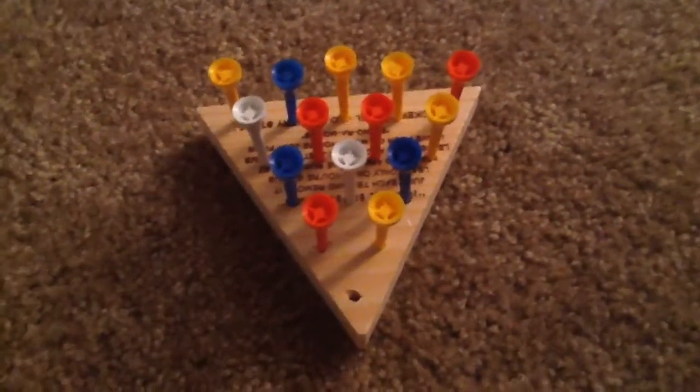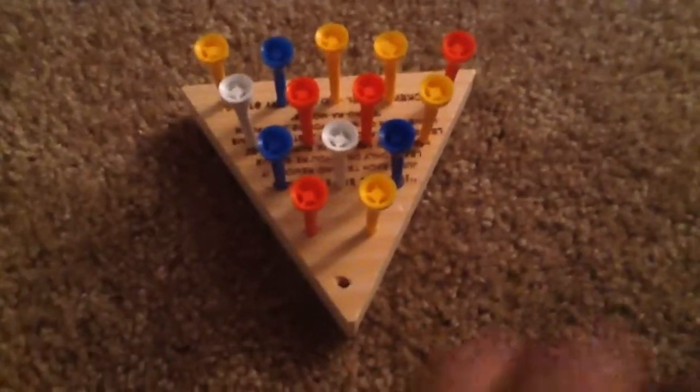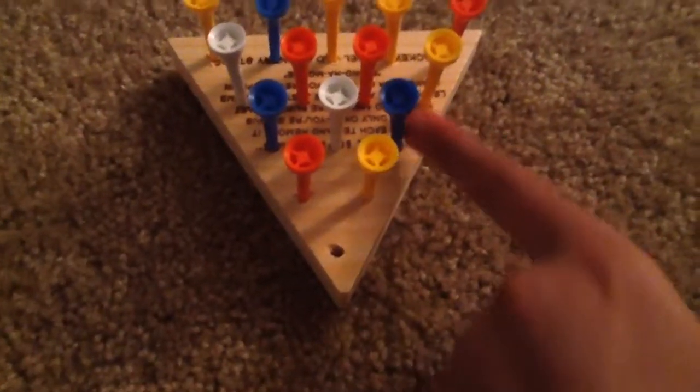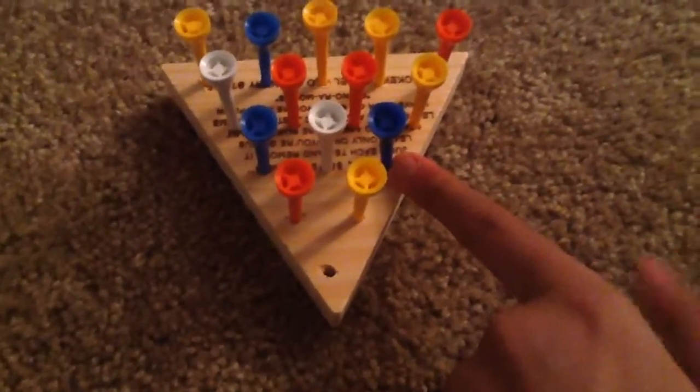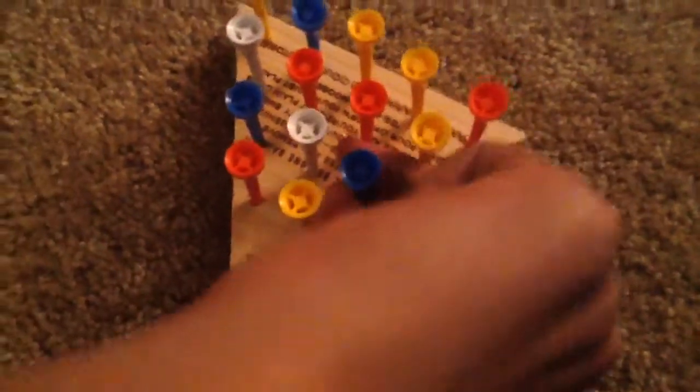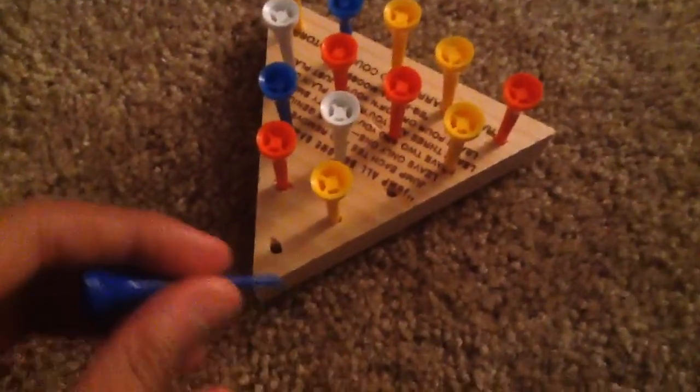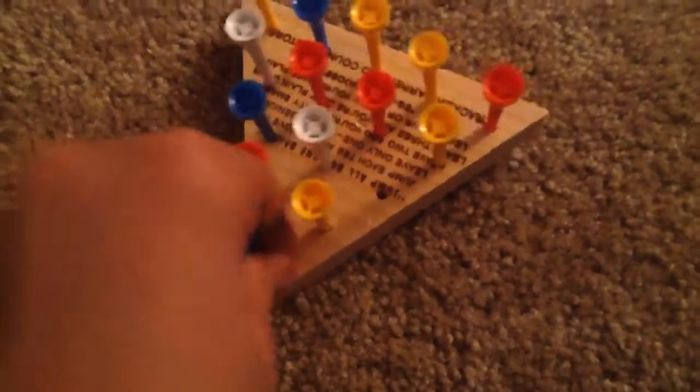So, first move you're going to want to make is number 4, which is this one, the blue one right here. You're going to have to jump 2, the yellow one. Sorry about my hand in the way, just I have to get these out of the hole.